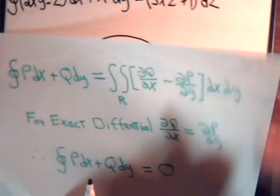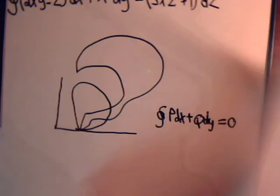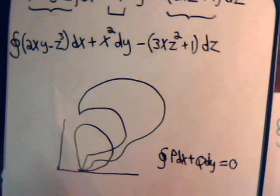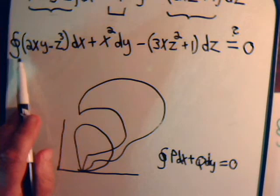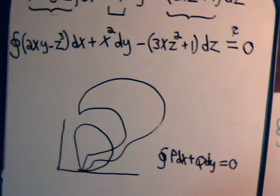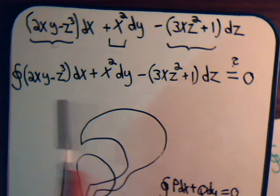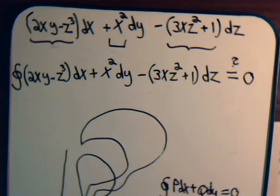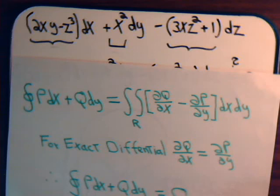But here's our question: in the two-dimensional case the functions are of x and y, but here we have a three-dimensional exact differential. Does the closed line integral equal 0 the way it must for a two-dimensional exact differential? We can't use Green's theorem on the plane to answer that, so we will consider this question in the next video. We've shown what the three-dimensional test for exactness is, and we'll take up the closed integral question next.